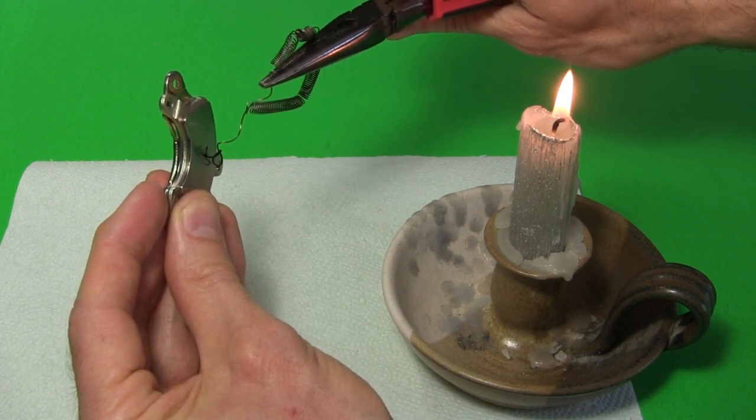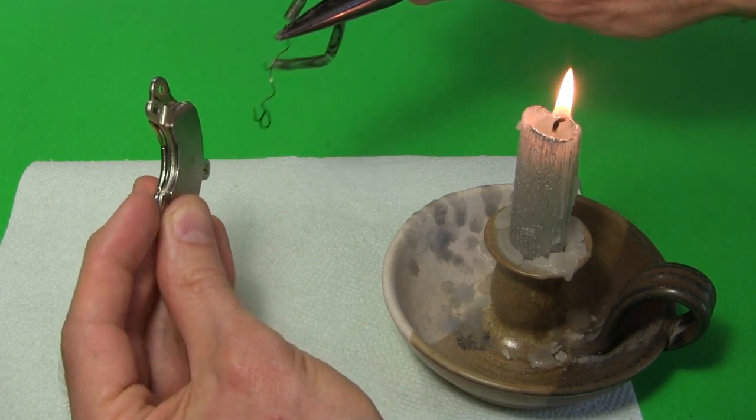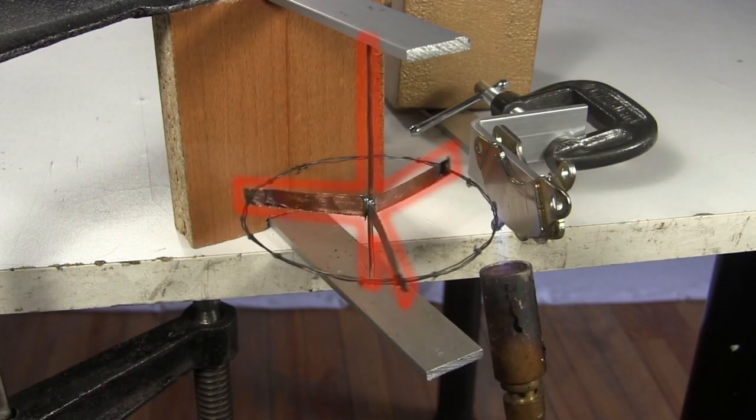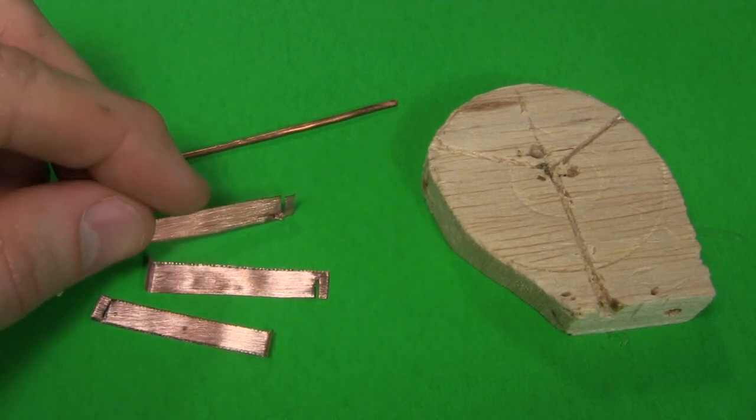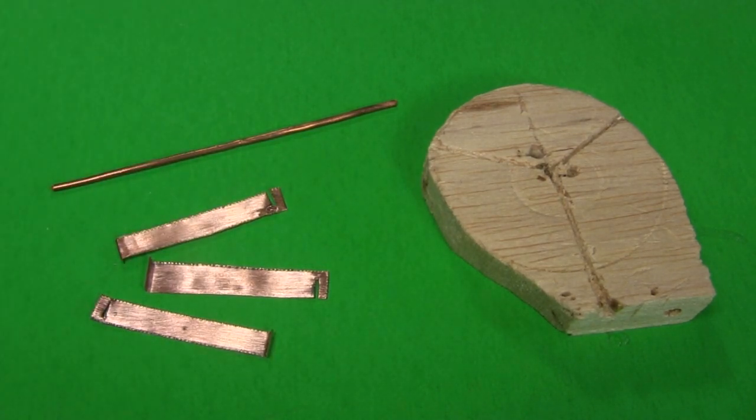That behavior means I should be able to use it to make a Curie temperature motor. The first thing I need to make is this copper support structure. I cut three pieces of copper with a notch in one end along with a copper wire for a center shaft.